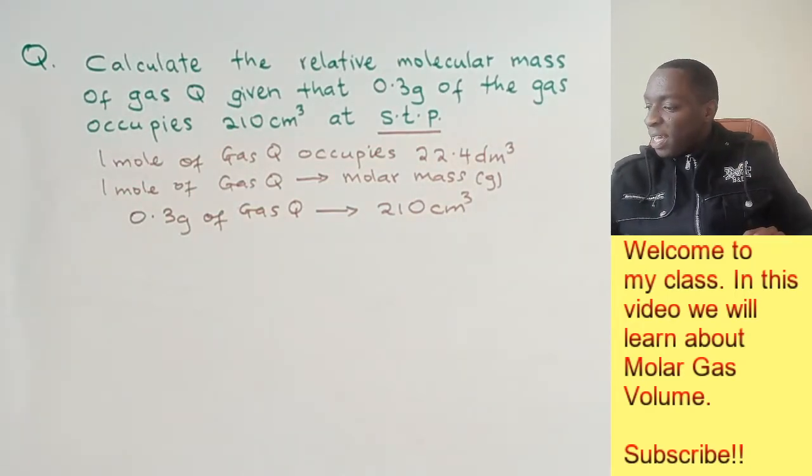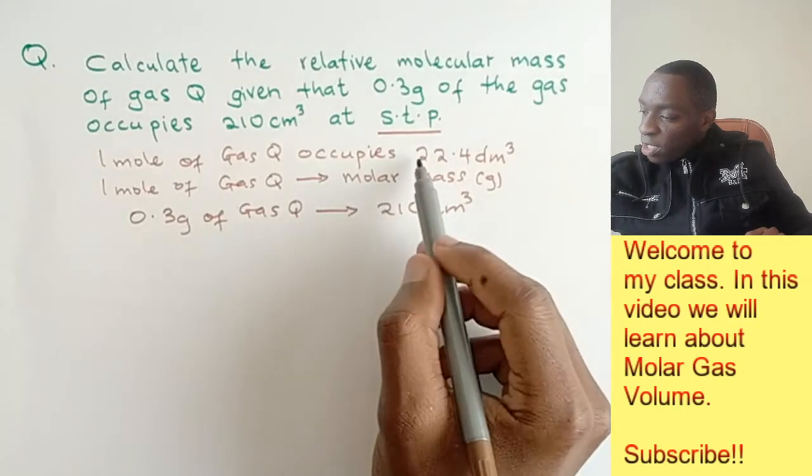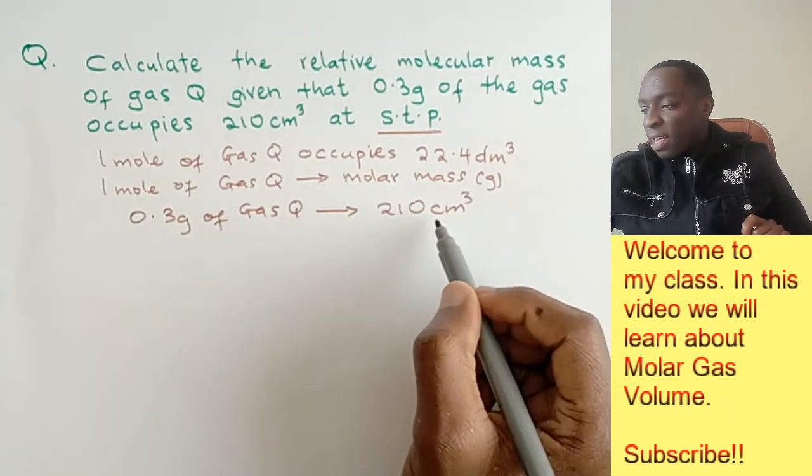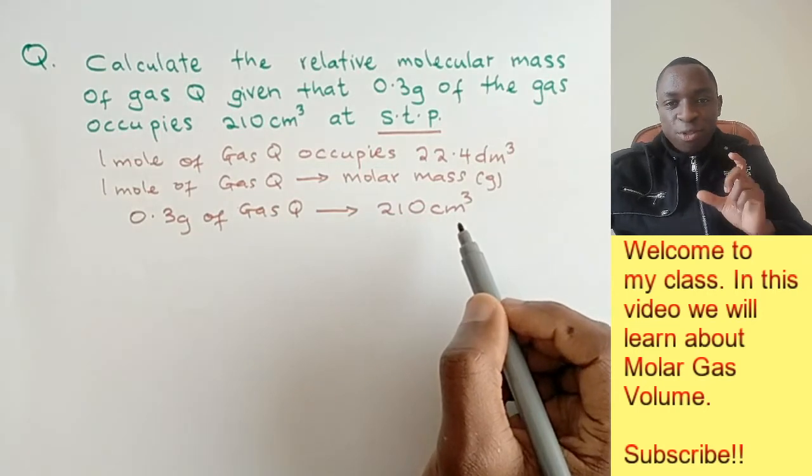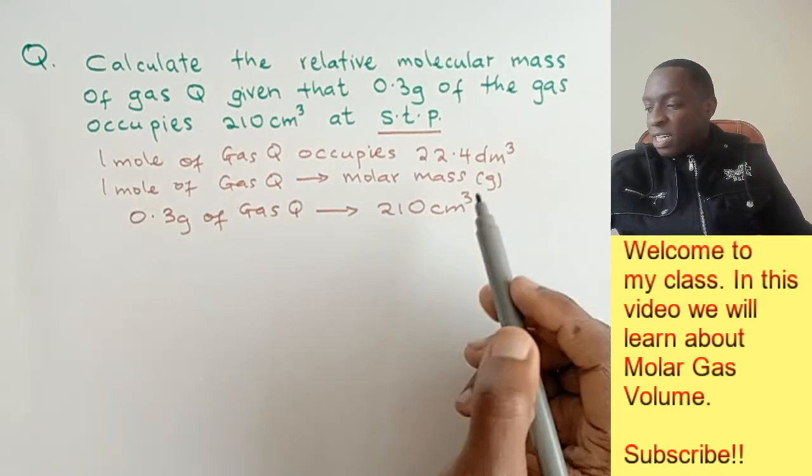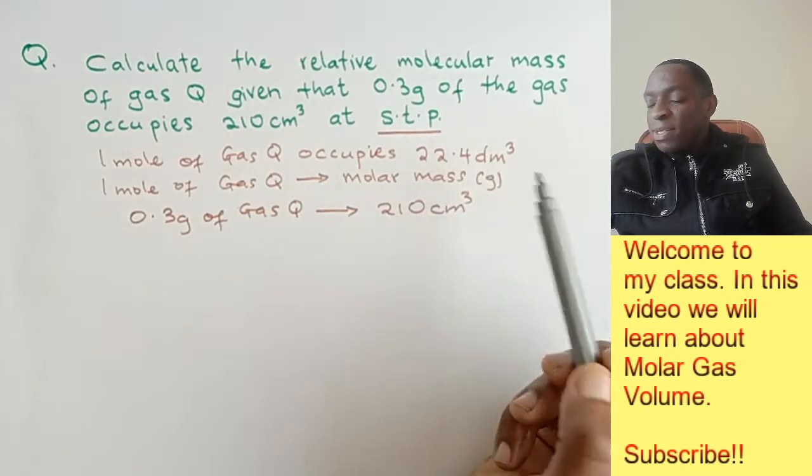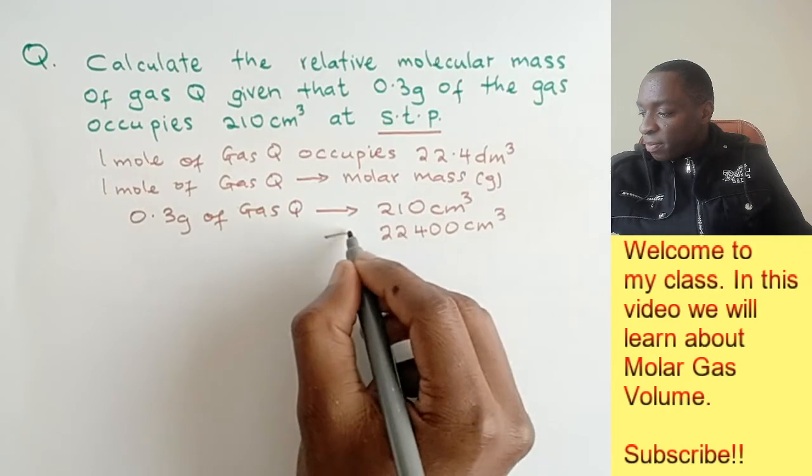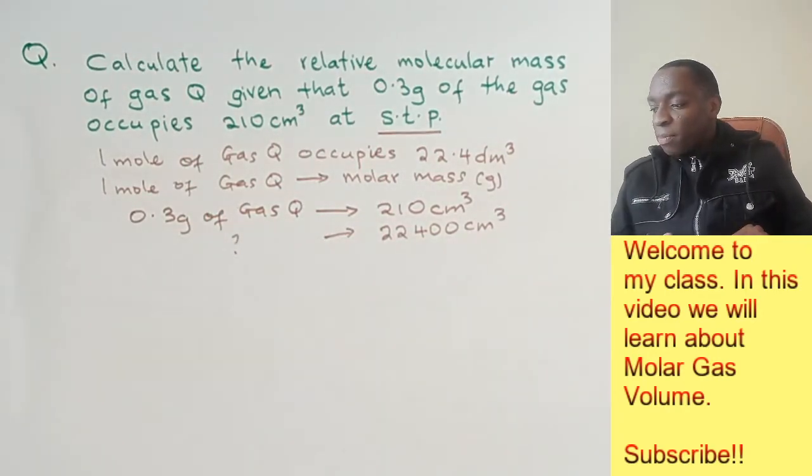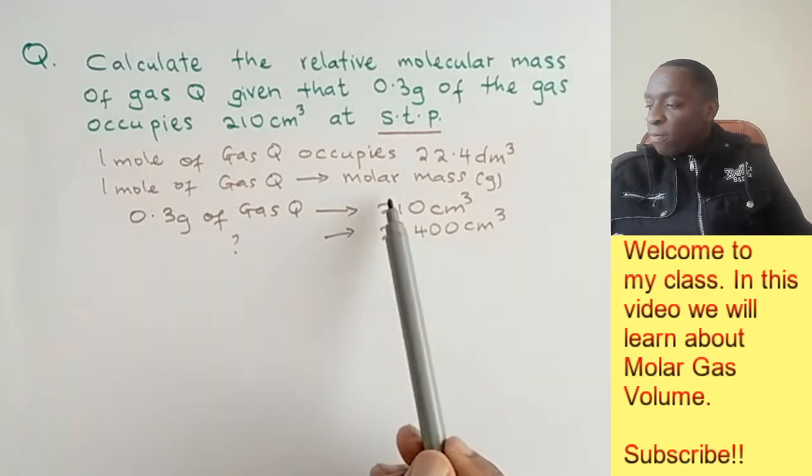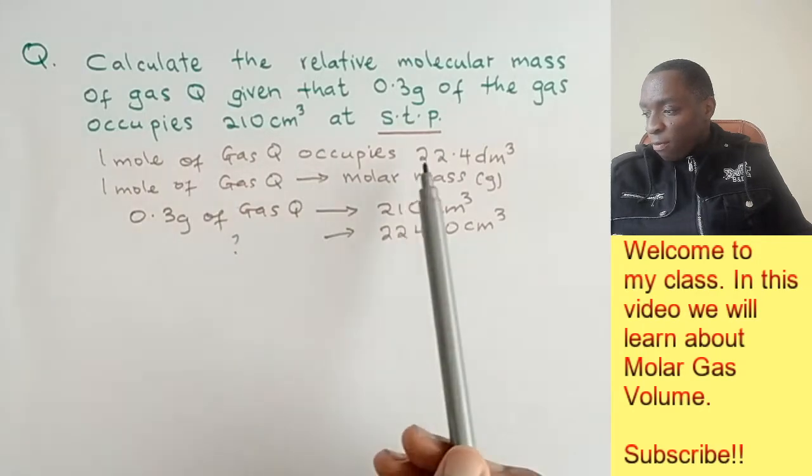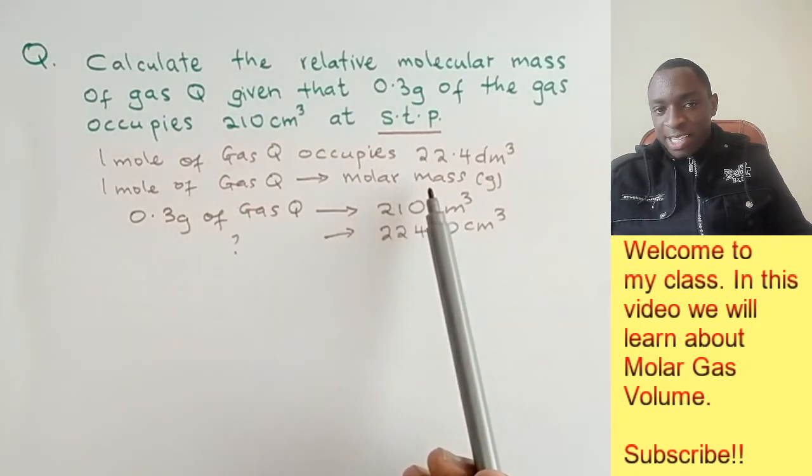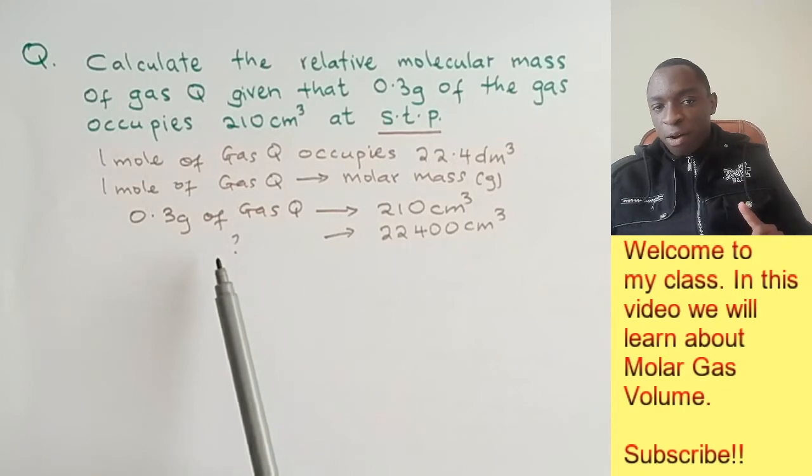The question is: how about the 22.4 dm³? But 22.4 dm³ is not the same unit as cm³, so we have to change to make sure they're in the same units. That means you multiply 22.4 times 1000, which gives us 22,400 cm³. So the question is: how many grams of gas Q would occupy that volume? Because that would mean we found the molar mass.